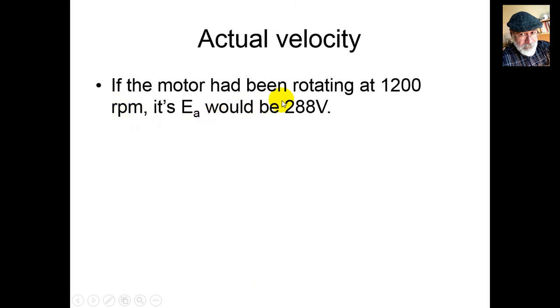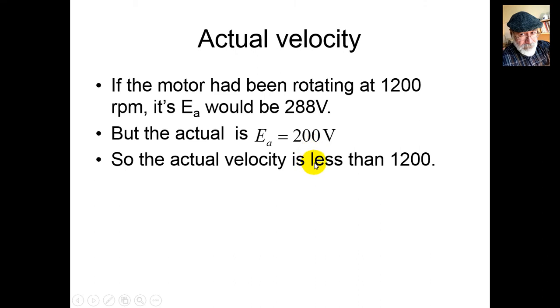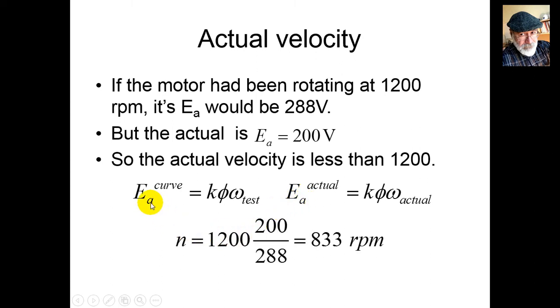But the actual Ea is not 288, it's 200. So the actual velocity is not 1200 RPM. The curve value was computed as Kφ times omega test at 1200 RPM. The actual induced voltage, 200 volts, is Kφ times the actual velocity. Kφ is the same in both cases since it depends only on IF and IS. So the relationship between 288 and 200 is the same as between 1200 RPM and the actual velocity. We deduce N equals 833 RPM.